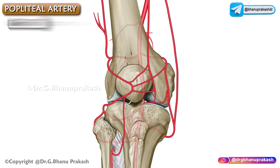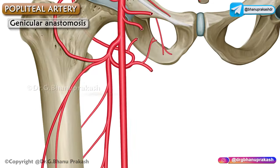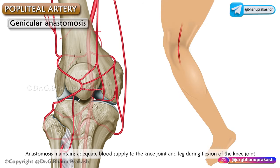The genicular anastomosis is an arterial anastomosis around the knee joint, mainly formed by the branches of the popliteal, anterior and posterior tibial, femoral, as well as profunda femoris arteries. This anastomosis maintains adequate blood supply to the knee joint and leg during flexion of the knee joint, when the popliteal artery is compressed and blood flow becomes sluggish.